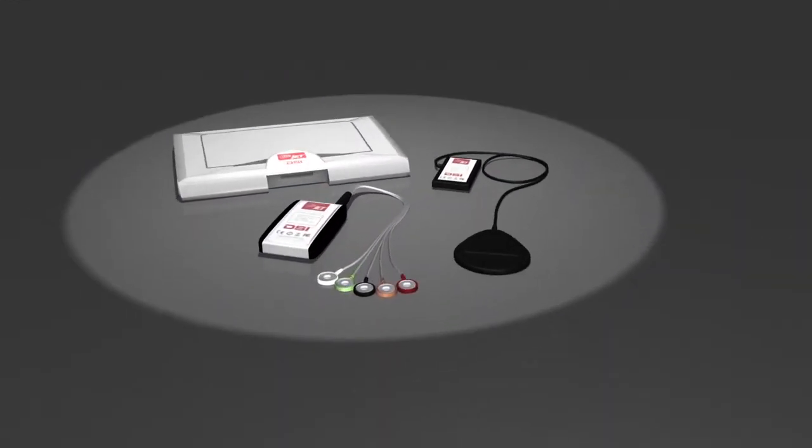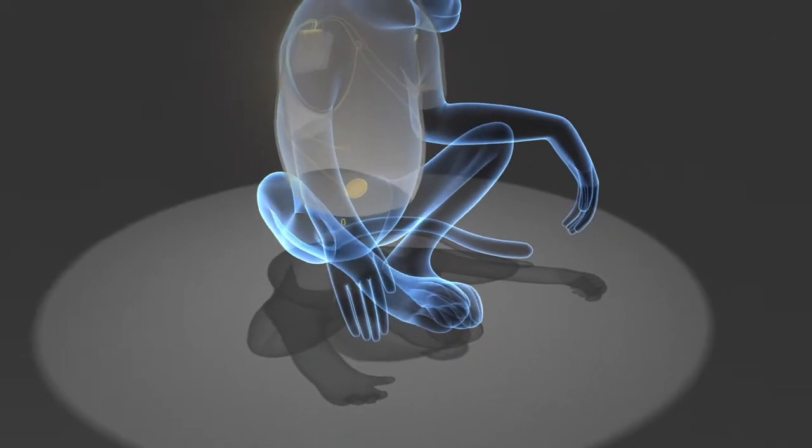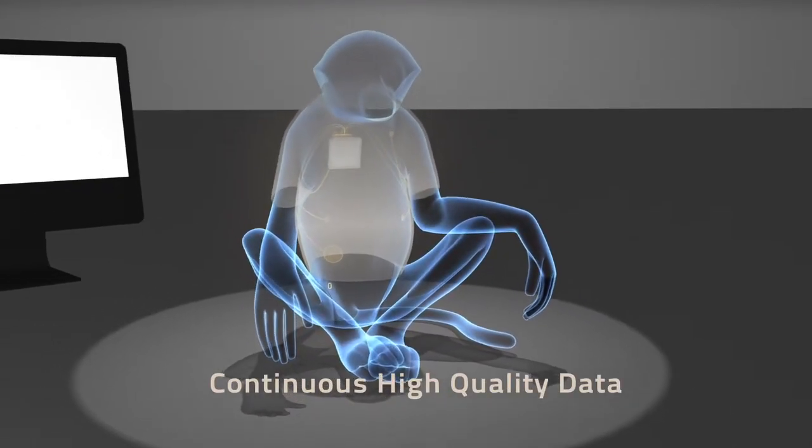Jacketed external telemetry, also known as JET, is designed for large animals and is capable of providing continuous high-quality data for short or long durations.